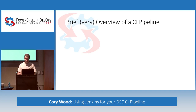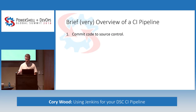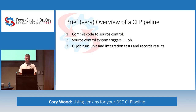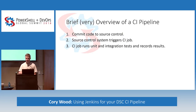Just doing a very brief overview of what a pipeline is, so you can follow along. The first step is to commit code to whatever source control repository you have. If you're not using source control already, please do so — it will save you many headaches. Once you commit that code, some piece of integration will actually trigger your CI job, the Jenkins job. That job is going to run any unit or integration tests you've written, probably in Pester if you're here, and record the results in the Jenkins job, as well as send a status message back to your source control repository letting you know whether that build passed or not.